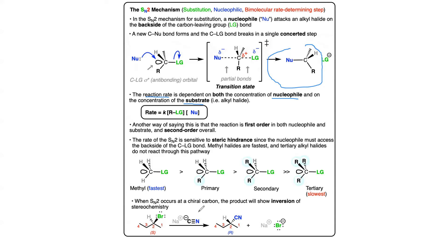When SN2 occurs at a chiral carbon, the product shows inversion of stereochemistry due to the backside attack. The key difference: in SN2 there is inversion of configuration, while in SN1 there is racemization. SN2 is bimolecular — the rate depends on both substrate and nucleophile — while SN1 depends only on the substrate and is unimolecular.